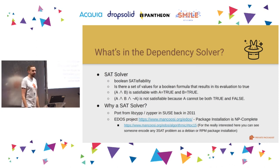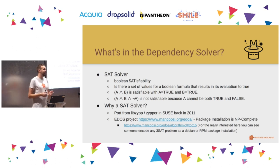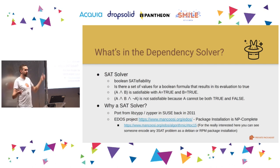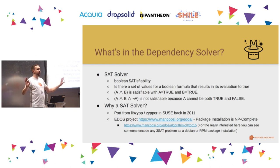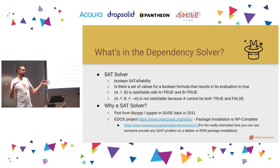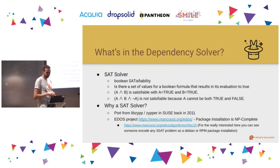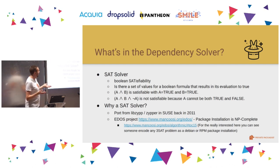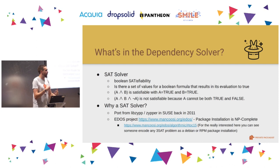What's in the dependency solver? A SAT solver. SAT stands for Boolean Satisfiability. It's a tool that answers whether for a given Boolean formula there exists a set of values for the variables so the entire expression evaluates to true. For example, A AND B is satisfiable if both are true. A AND B AND NOT A is unsatisfiable because A cannot be both true and false at the same time.